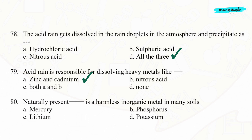Question 80. Naturally present mercury is a harmless, inorganic metal in many soils. Option A: Mercury.